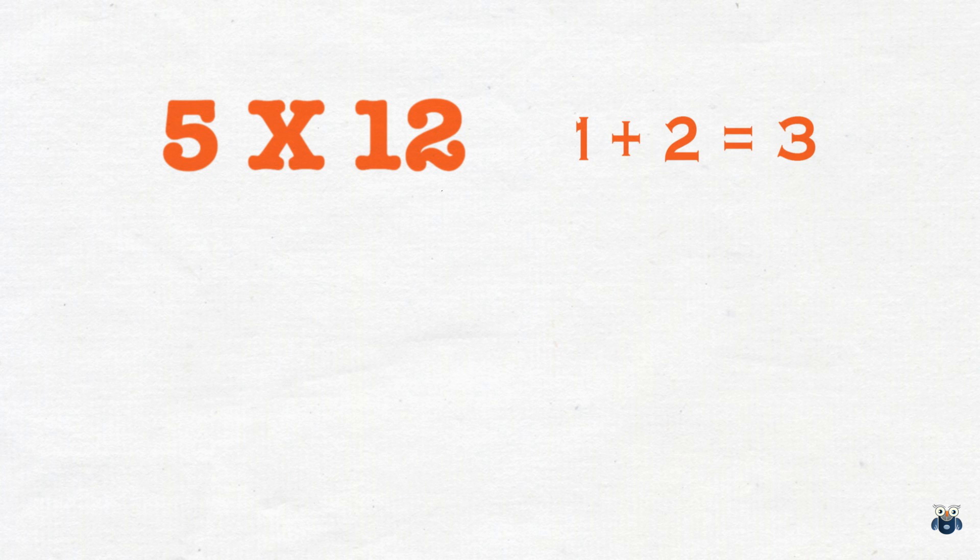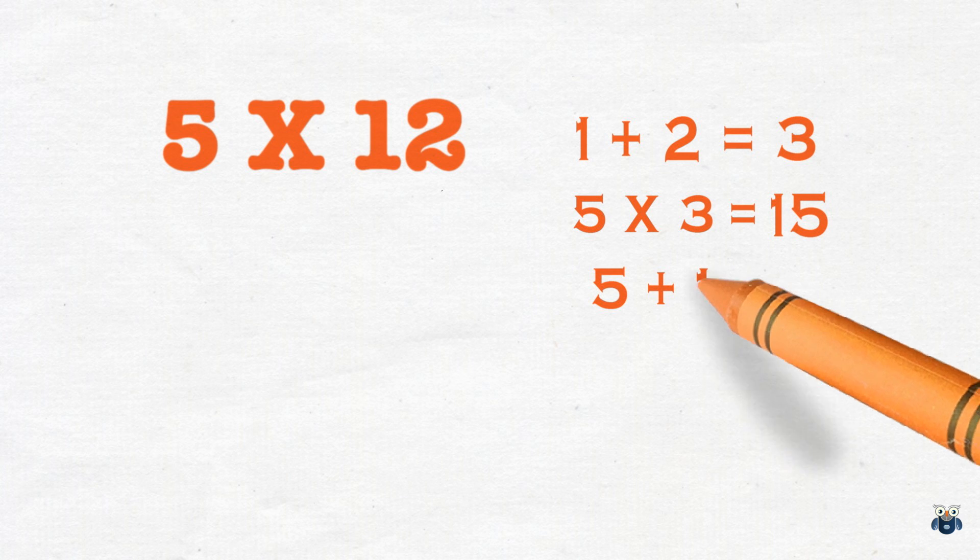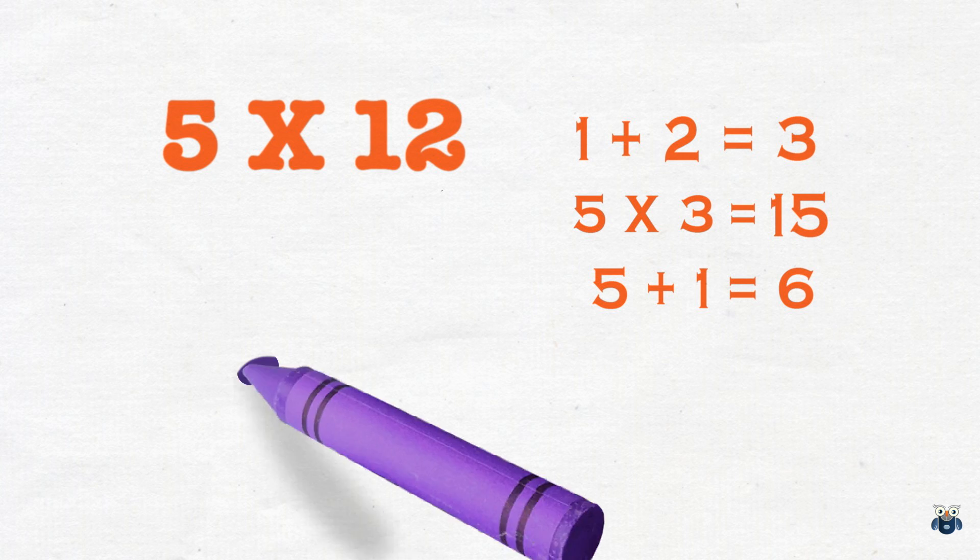Now, just as we multiplied 5 and 12, we multiply 5 and 3, which is 15. Hey, but 15 is bigger than 9. So, we add the digits again. 5 plus 1 is 6. That's better. This is the first part of our check.